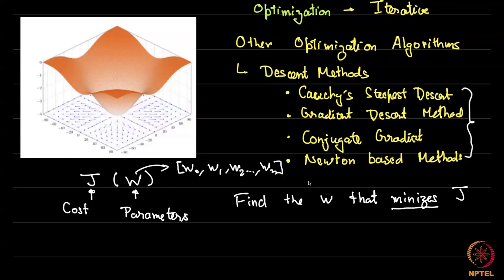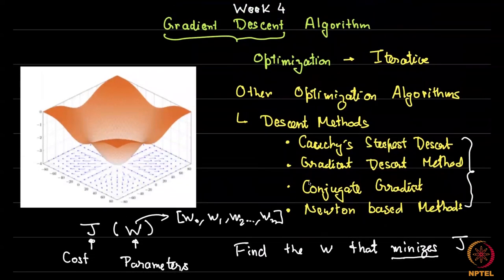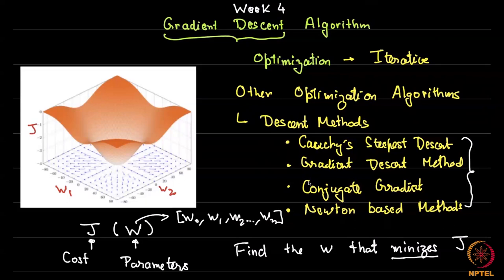Let us come back to our purposes where we are typically always minimizing. In the last video I reviewed what a gradient means. Suppose I have a parameter space looking at w1 and w2 — two parameters — and this is J. At a value w11 and w21, at this point p, the z-axis gives you J at that point.